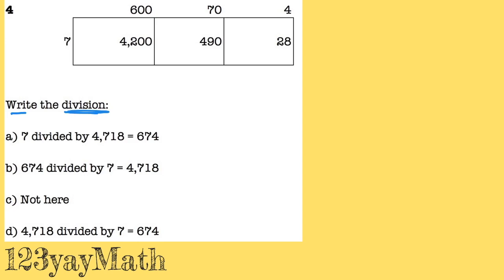And I see that I have 7 divided by 4,600 blah blah blah, not here, and then 4,000 blah blah blah.